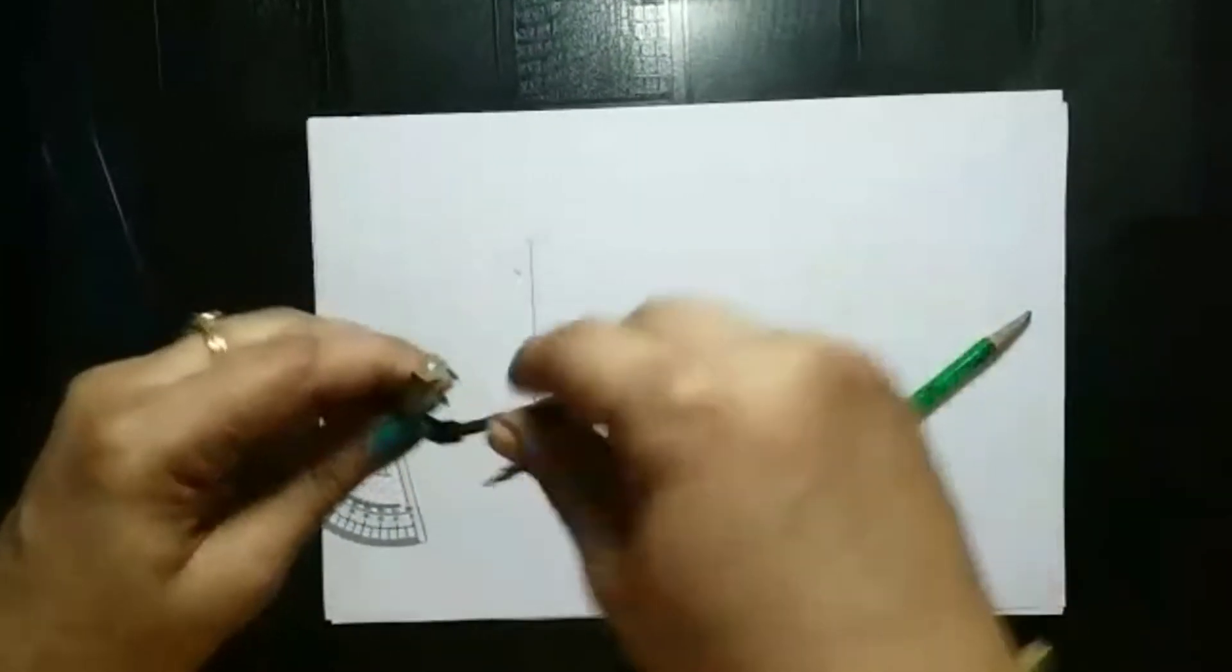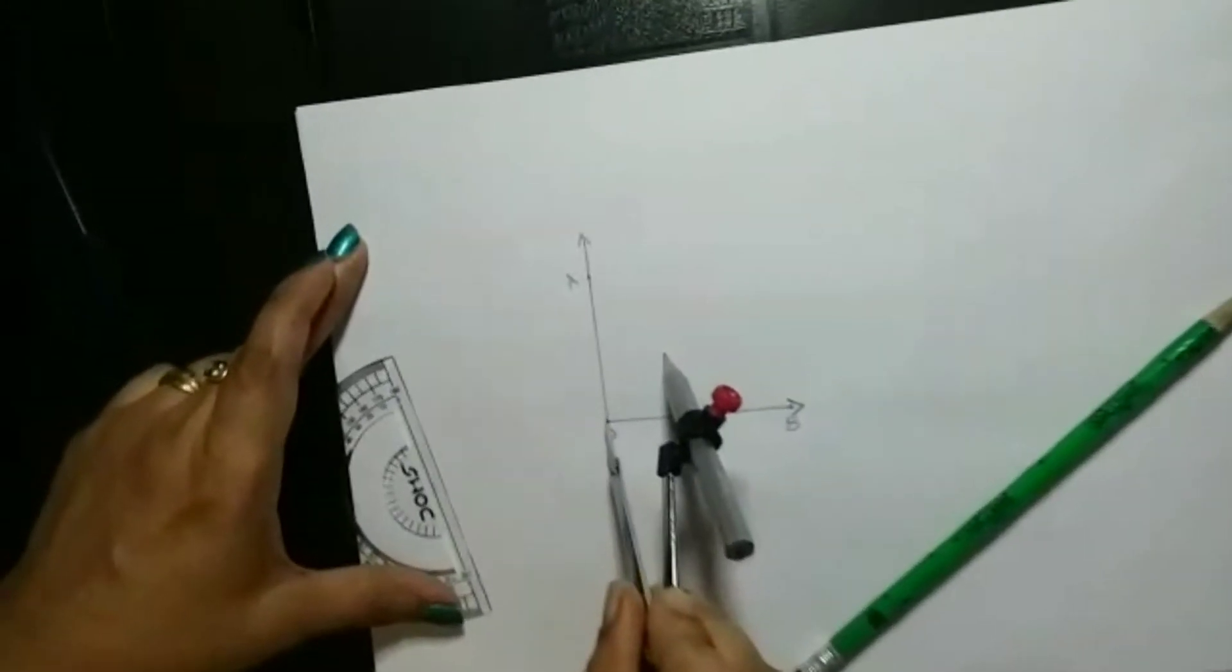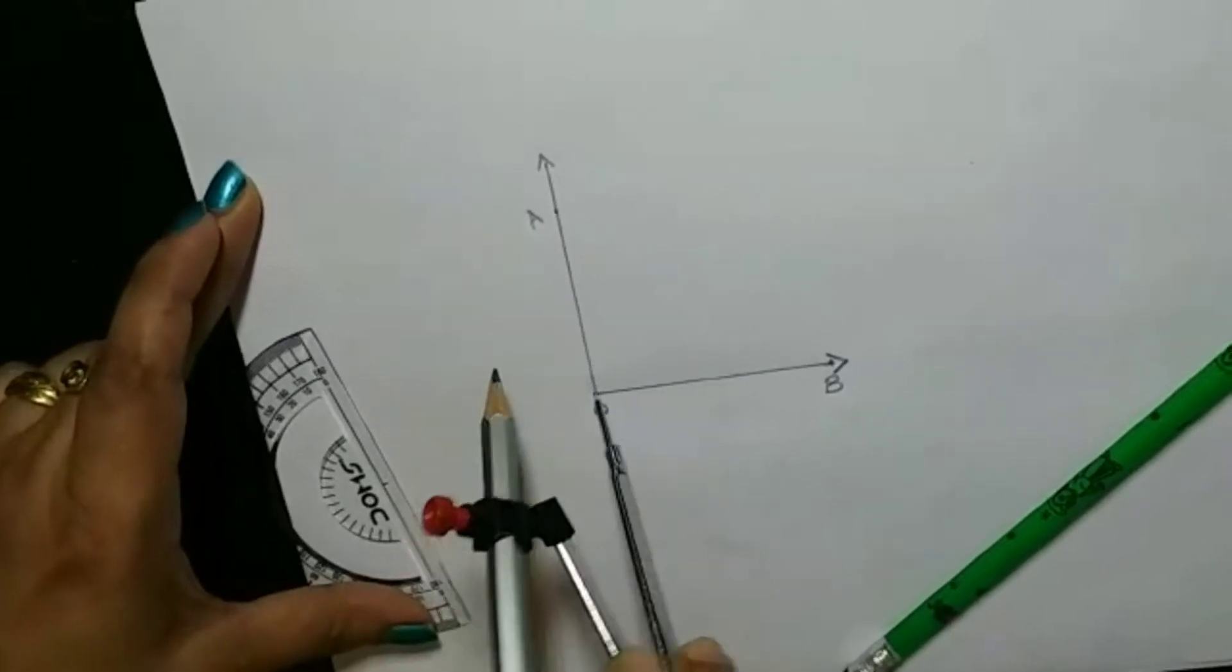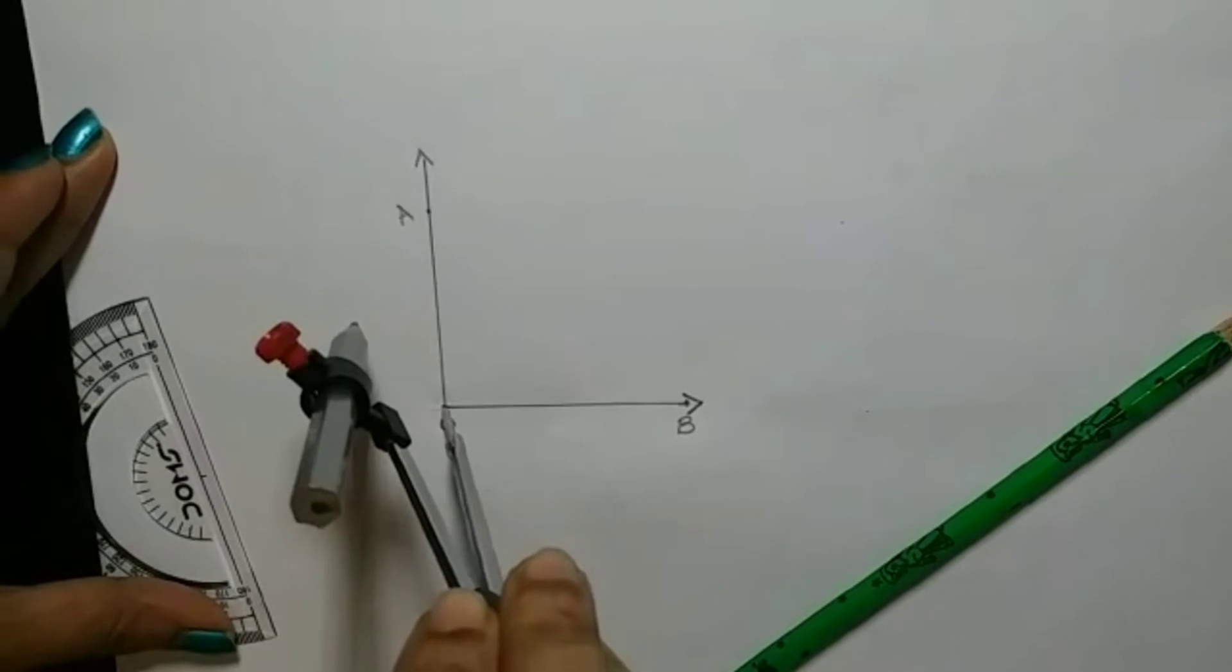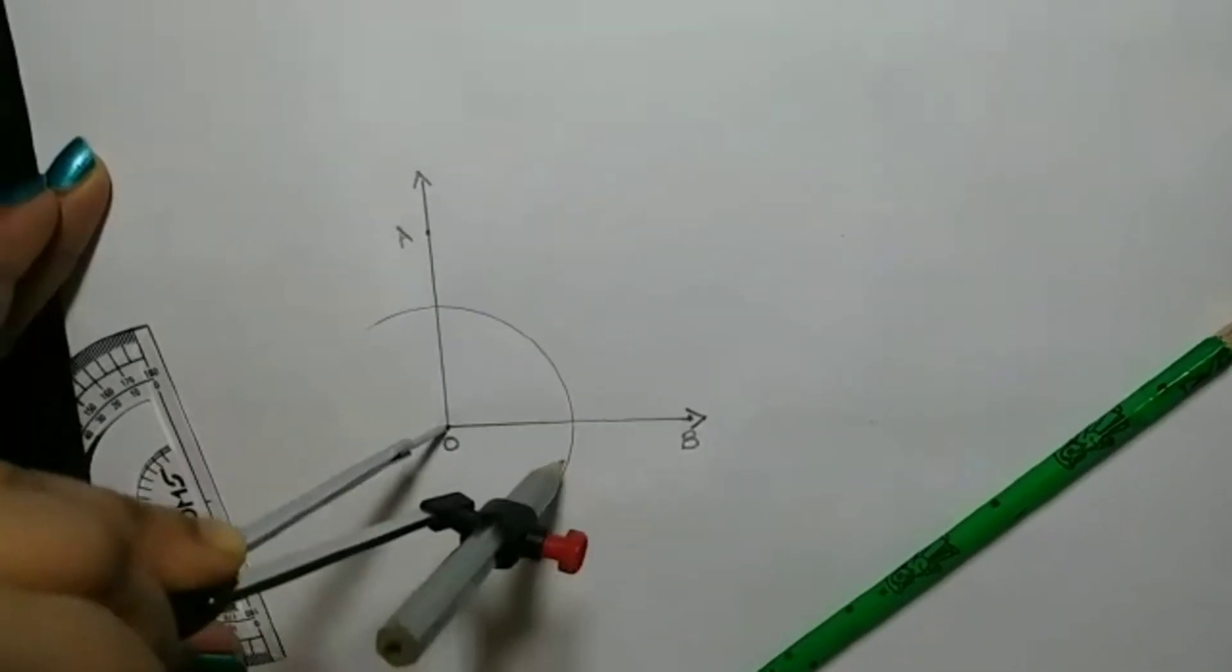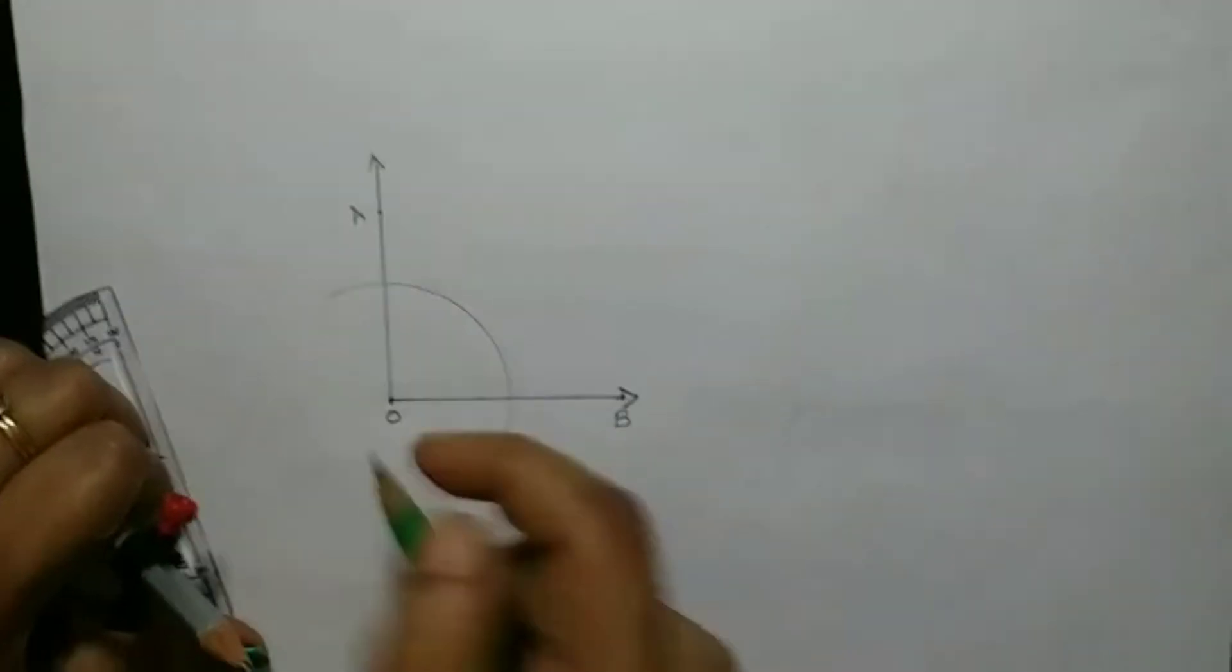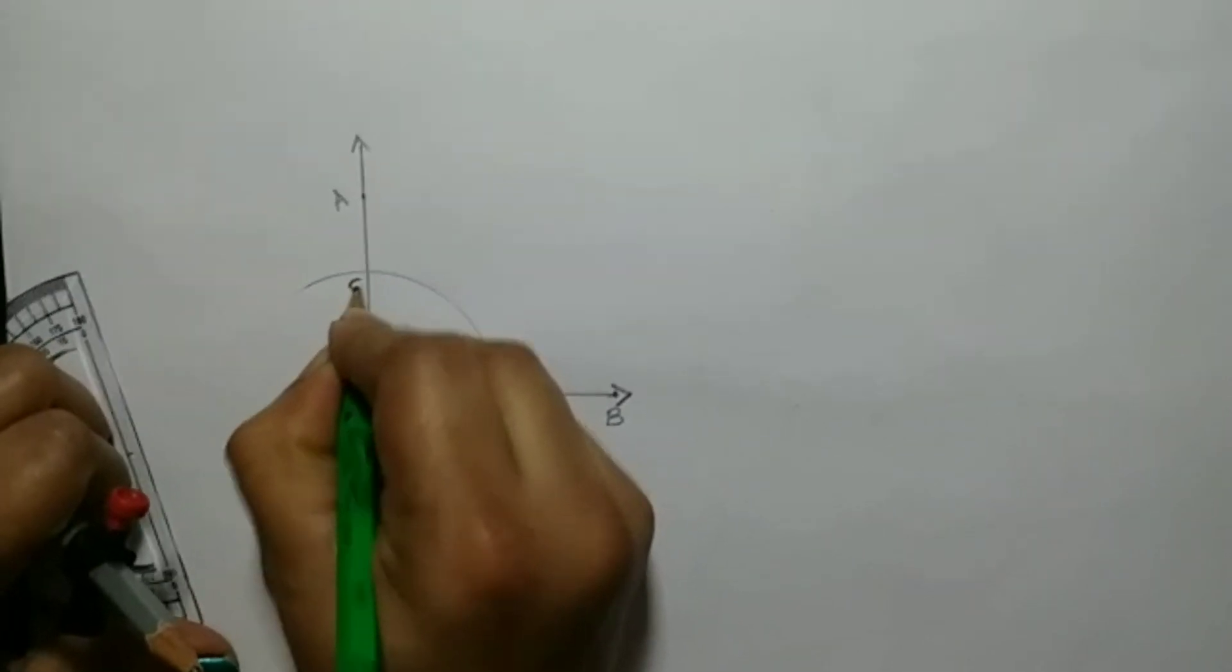Then after that, with O as center, you can just point on O. This needle should attach on O. Then after that, you can draw an arc. Here there are two intersecting points. This point I am marking it as C and this point is D.